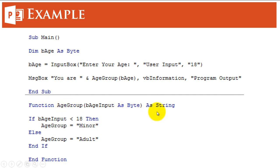The function itself is a string function. So it returns a value saying minor or adult, which is a string. So this function age group returns a string value.